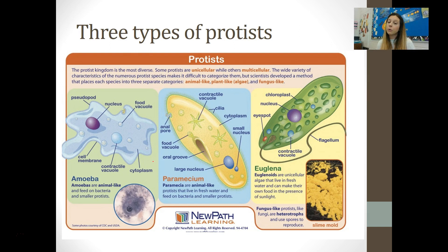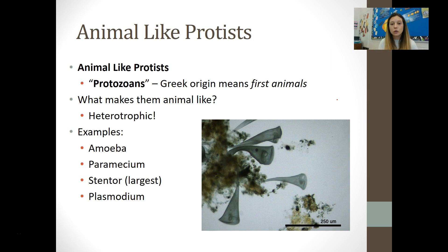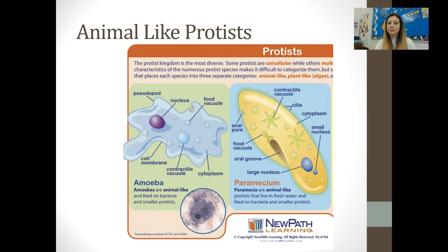There are three protists you are expected to be familiar with: the amoeba, the paramecium, and the euglena. You're going to have to draw these images. Animal-like protists are referred to as protozoans — the Greek origin of that word means 'the first animals.' These are probably the ancestors to our modern-day animals. They are heterotrophic, meaning they have to consume other things to get their food and energy. Examples would be amoeba, paramecium, stentor, and plasmodium.